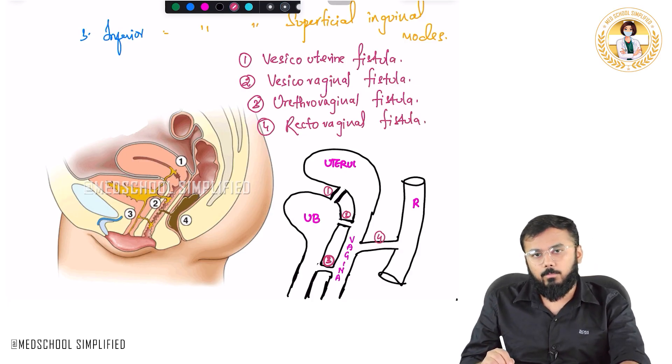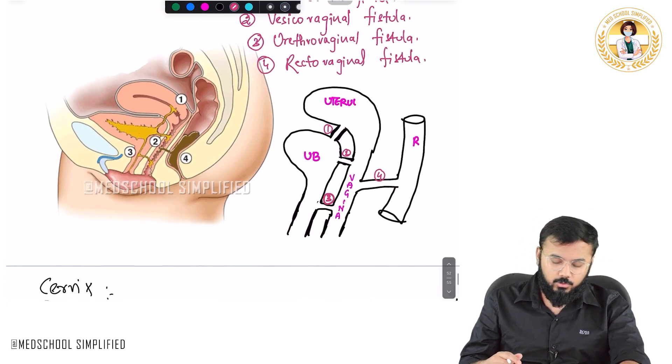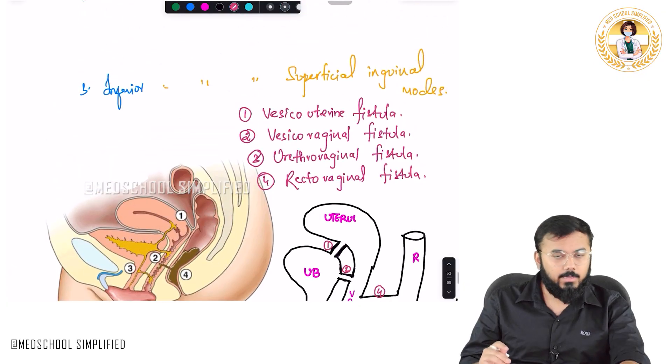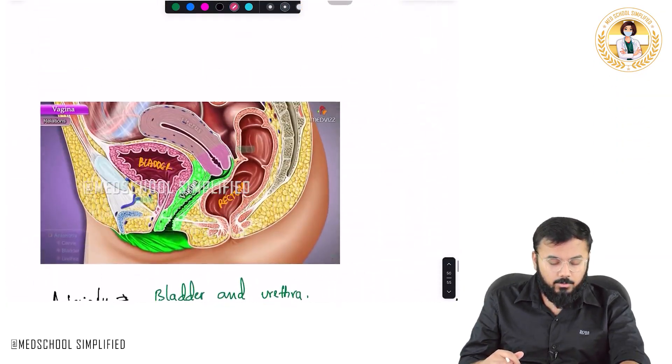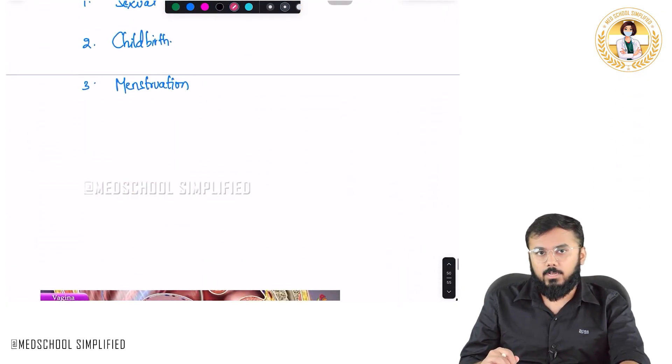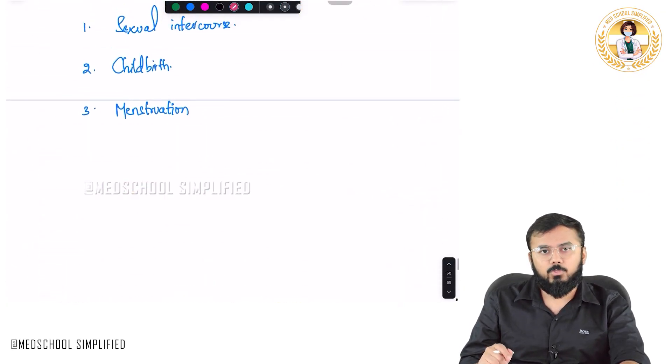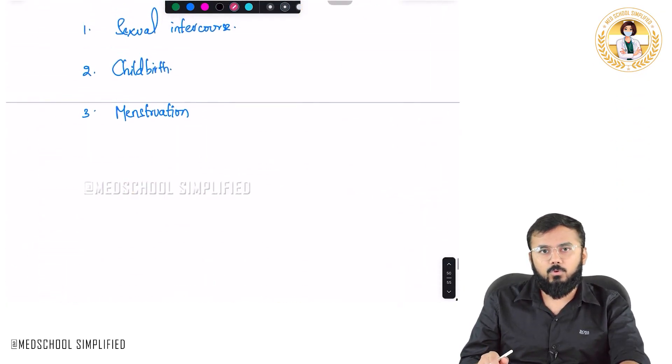There are four important types of fistulas which you have got here. This is all you need to know regarding the vagina. Thank you so much for watching my video. Goodbye.